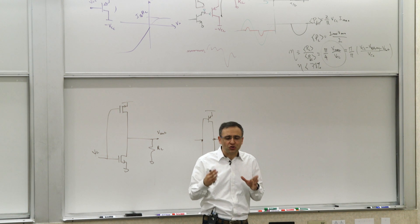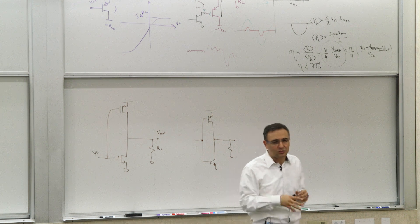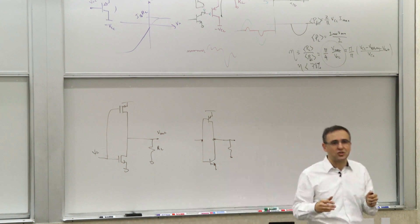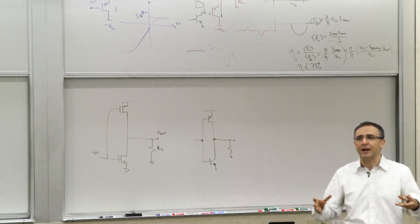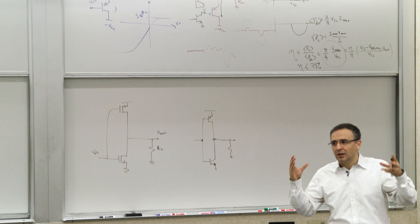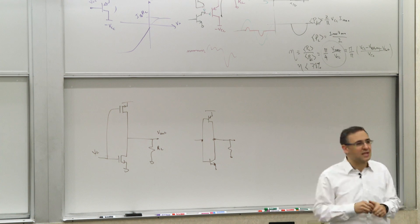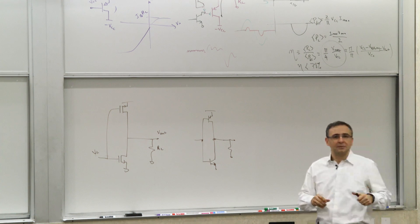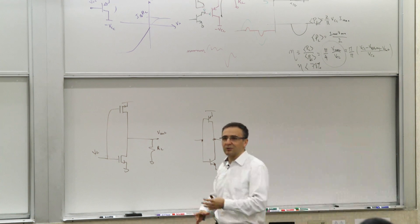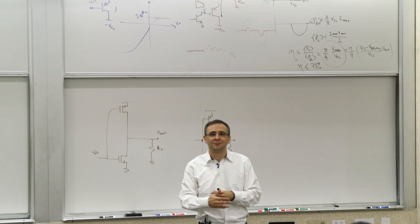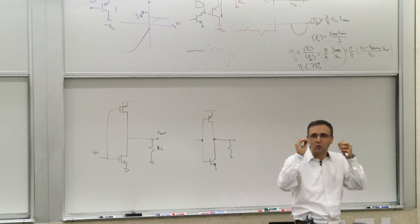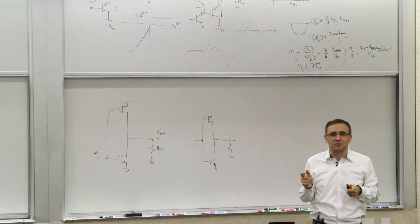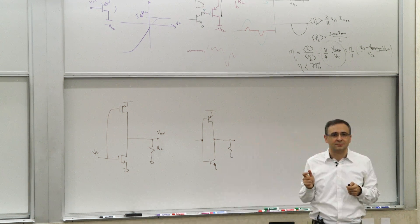This was a very brief introduction to output stages—driver stages, power amplifiers. It's a research area of its own, but this gives you some of the core concepts: Class A efficiency under 25%, Class B efficiency up to π/4 ≈ 78%, push-pull topology, crossover distortion, and the zero-voltage-switching concept for higher efficiency. Any questions?